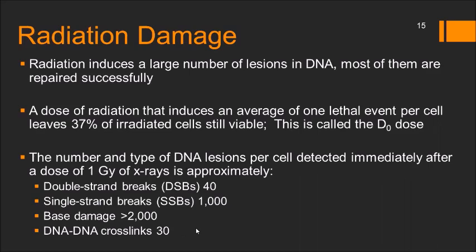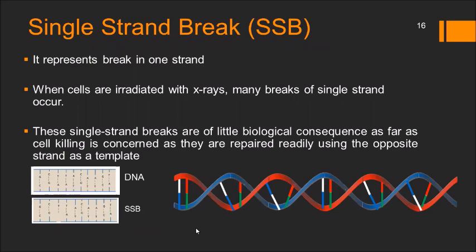A single strand break represents breaking one strand of the DNA. When cells are irradiated with X-rays, many single strand breaks occur. These are of little biological consequence as far as cell killing is concerned, as they are readily repaired using the opposite strand as a template. As shown in the diagram, a single strand break is repaired by taking the intact opposite strand as a template. Two single strand breaks that are well separated are also handled separately and repaired readily.